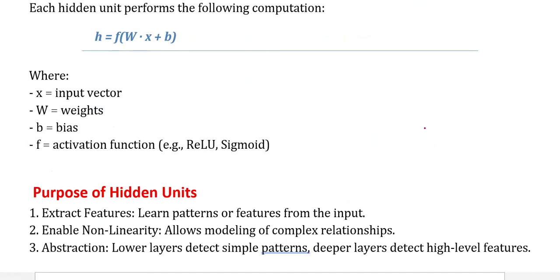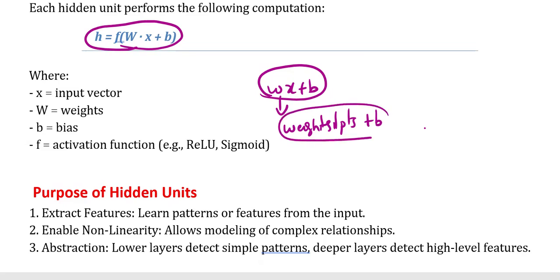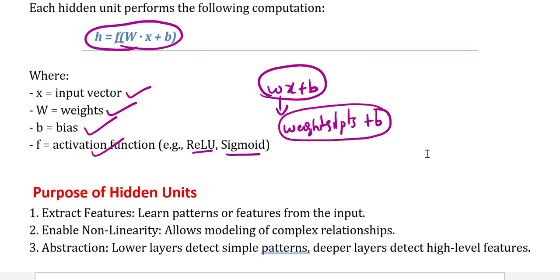One very important point: how to perform the computation. We multiply w*x plus b, where w is the weights and x is the inputs, and add bias value b. Here, x is the input vector, w is the weight vector, b is the bias, and f is the activation function. There are different types of activation functions such as ReLU and sigmoid.